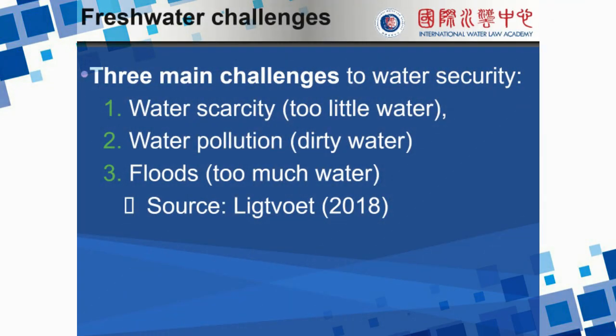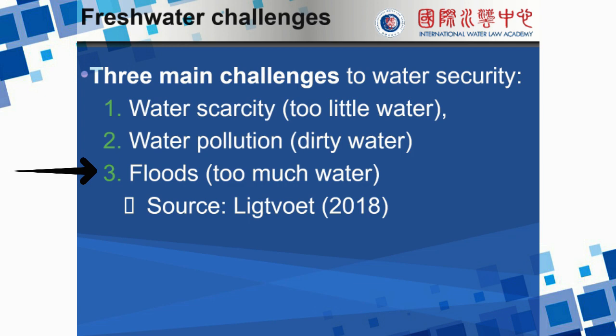The three main challenges when it comes to freshwater management are too much water, too little water, and polluted water — drawn from research by Lichtvoet and colleagues in 2018. There can be too little water, resulting in water scarcity; dirty or contaminated water, which is an issue of pollution; or, incidentally, too much water in the case of floods and international disasters. Let's look at each of those in turn.